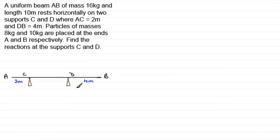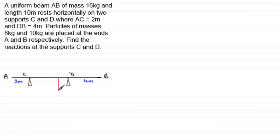To complete this diagram, we need to put on some forces. First of all, being a uniform beam AB of mass 16 kilograms and length 10 meters, the weight would act in the middle. The middle is going to be 5 meters in from one end. So we'll put the weight acting downwards here — that's going to be 16G Newtons.